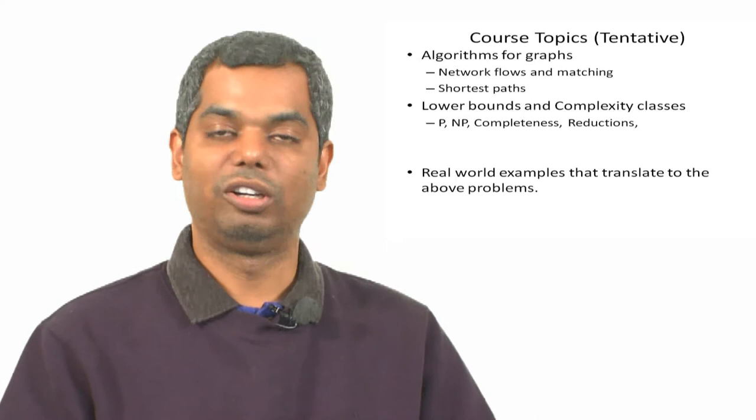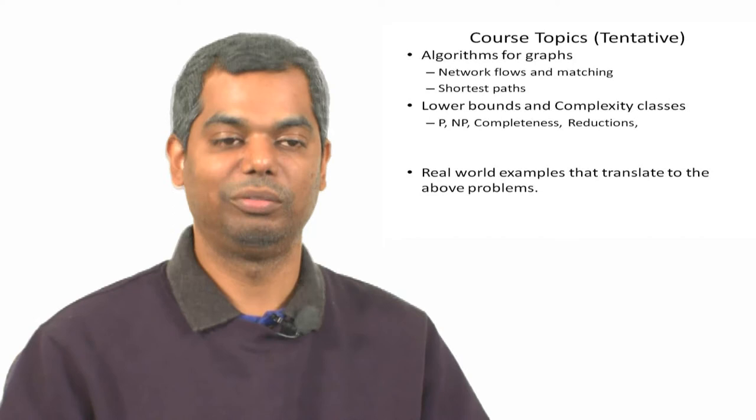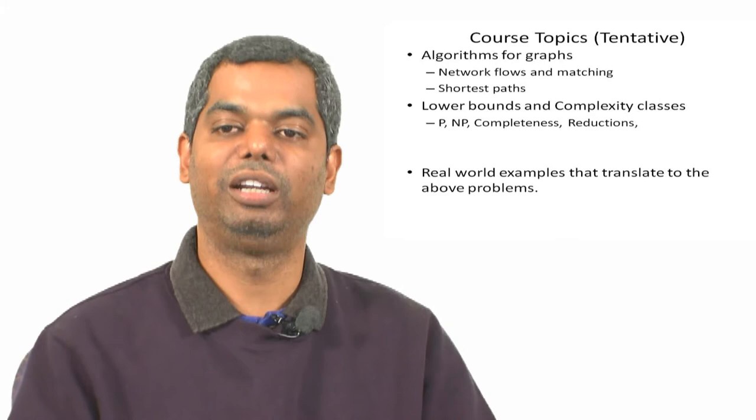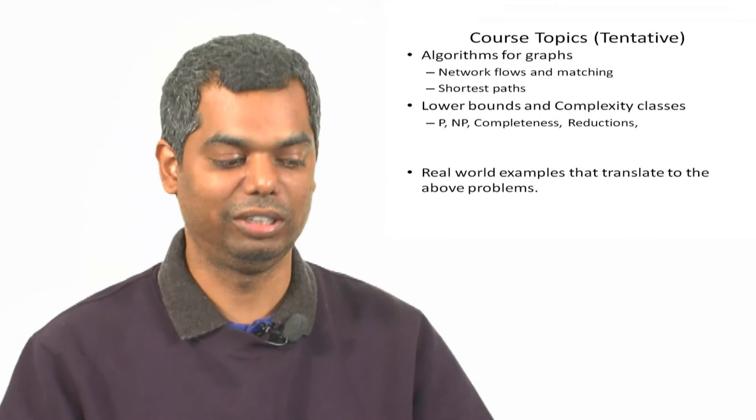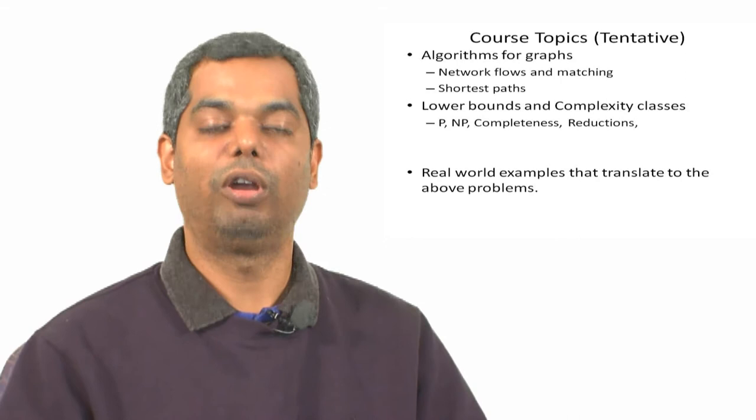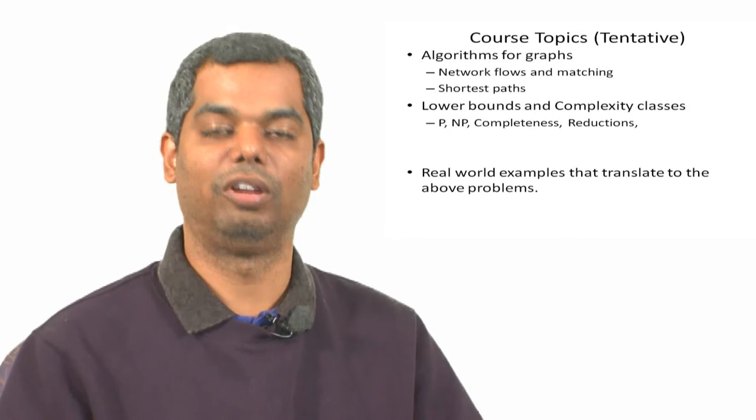We should be able to relate to several problems on graphs such as matching, network flows, and shortest paths. Finally, the last module of this whole course, we will talk about lower bounds, complexity classes, P and NP completeness, and reductions, which try to relate or put together problems of a similar difficulty or problems of a different difficulty class. How do we reason that these are difficult, some of them are easy—these kinds of things.